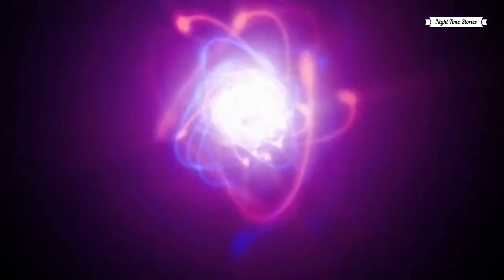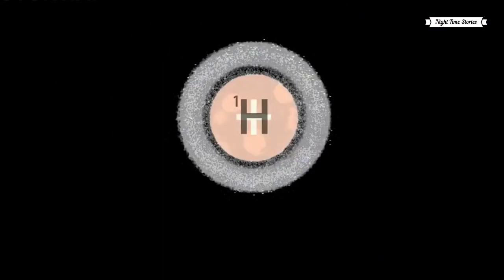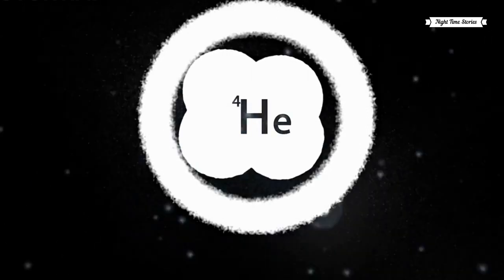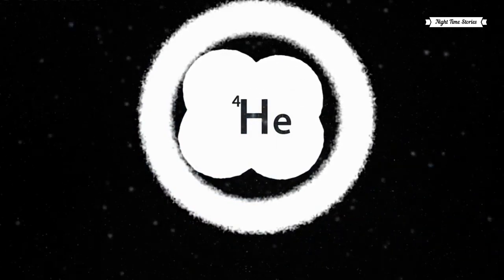Now protons are fascinating entities. They may seem simple, but they hide a world within themselves. Tucked inside these protons are six different types of quarks. Yes, you heard it right. Six different types: up, down, charm, strange, top and bottom. These quarks whirl around, dancing in a ballet of subatomic particles, each playing a crucial role in the construction of our universe.